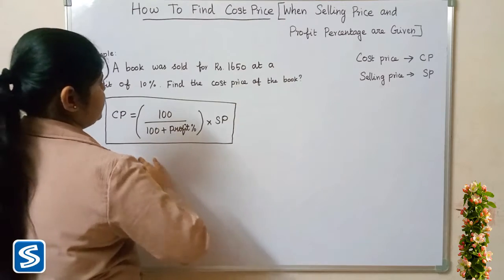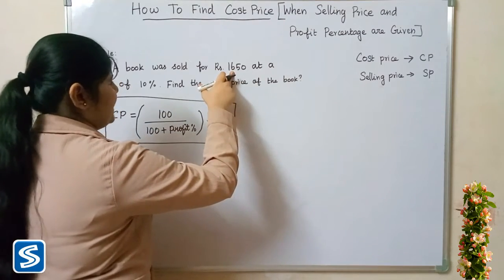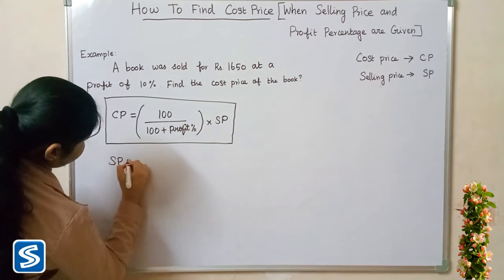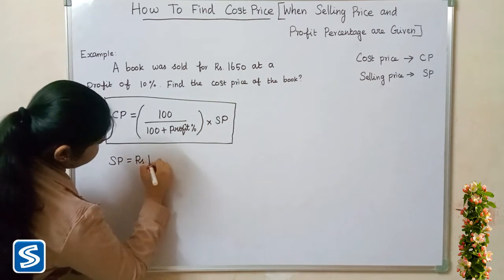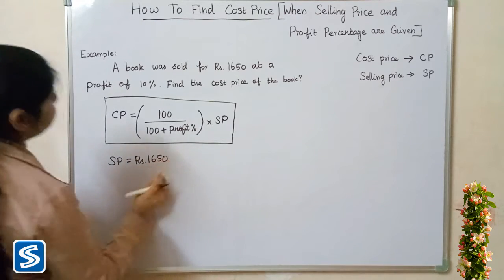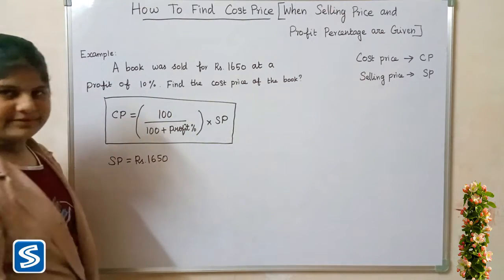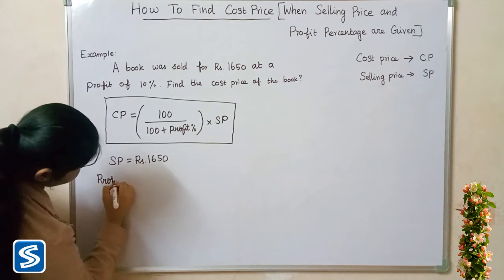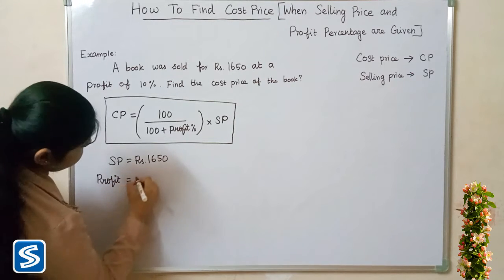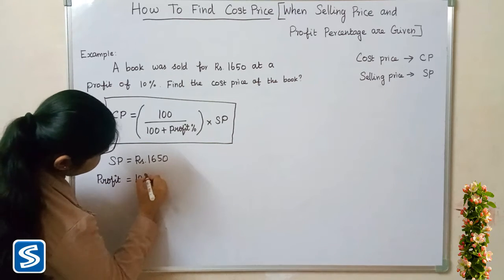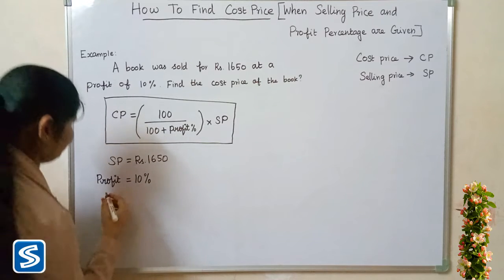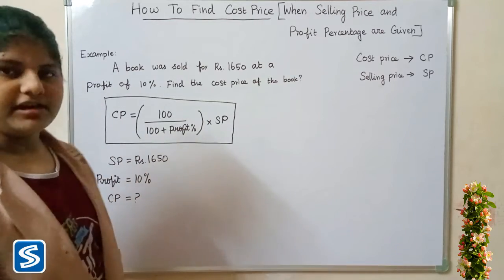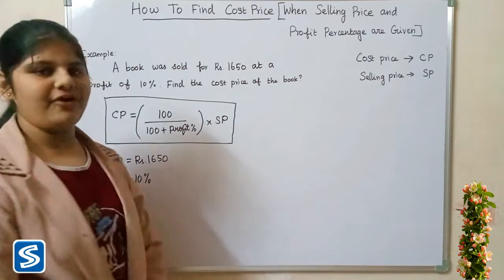Here, selling price is rupees 1650, profit is 10 percent, and now we have to find cost price. We need to substitute these values into the formula.